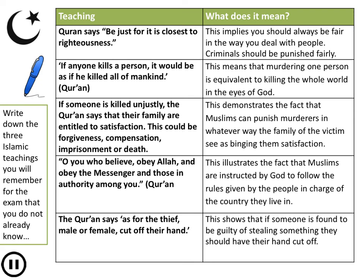The Quran also says: O you who believe, obey Allah, obey the messenger of Allah, and those in authority among you. This illustrates that Muslims are instructed by God to follow the rules given by people in charge of the country they live in — meaning wherever you live, you need to follow the laws of that country, so being a criminal is always wrong. Finally, the Quran says: as for the thief, male or female, cut off their hand. This shows that if someone is guilty of stealing they should have their hand cut off, and could also be used in favour of corporal punishment.